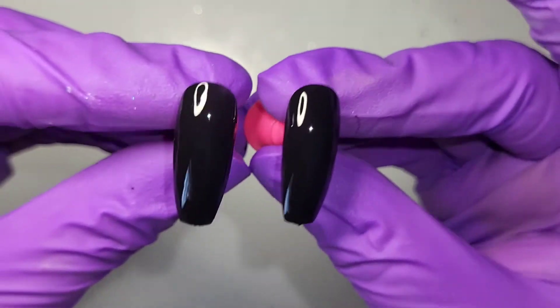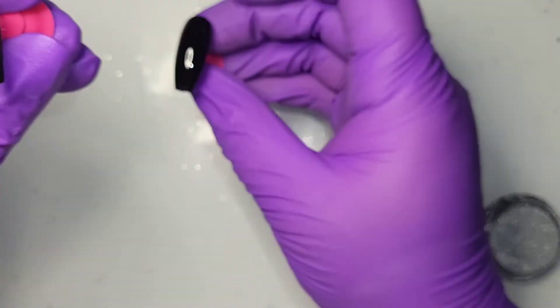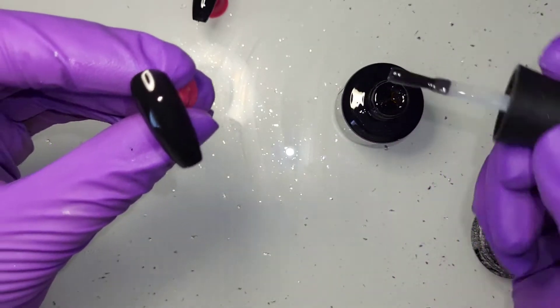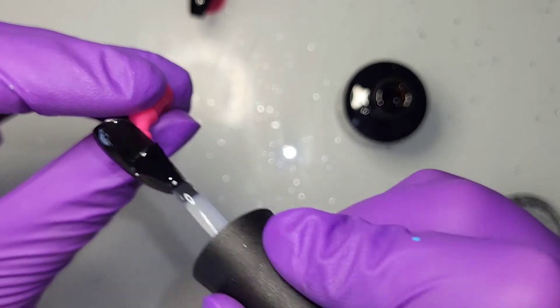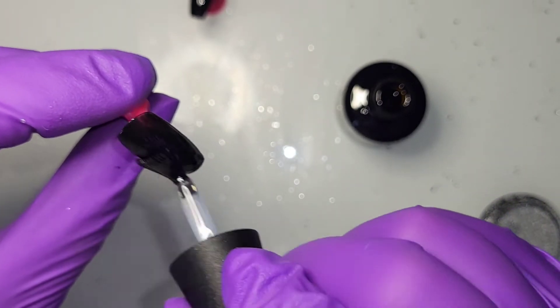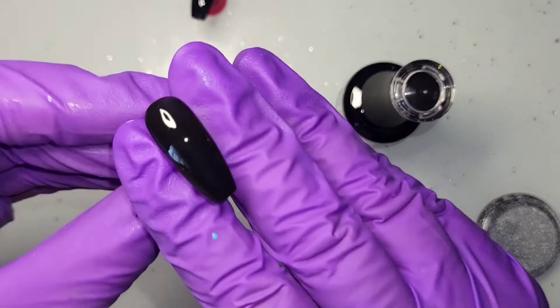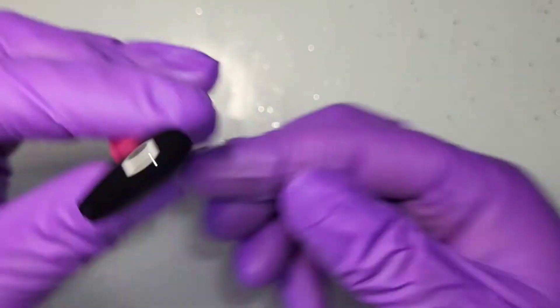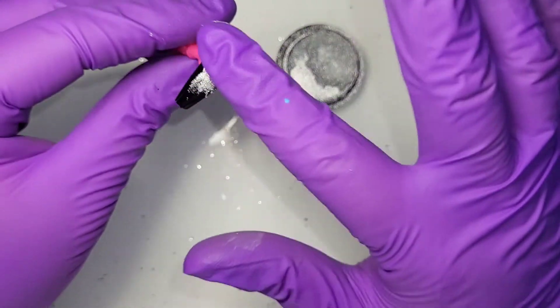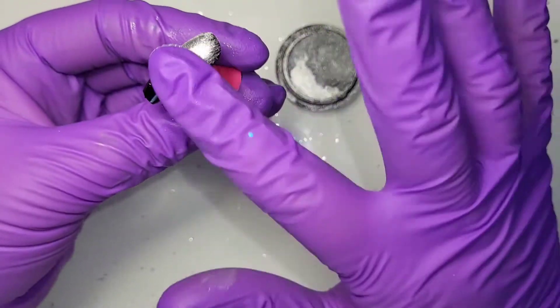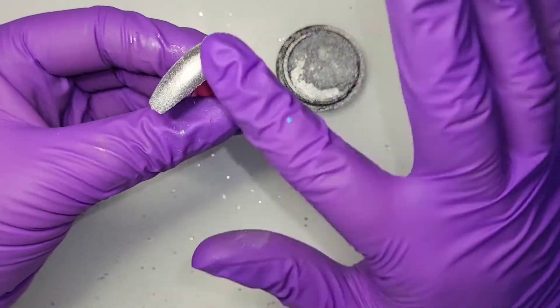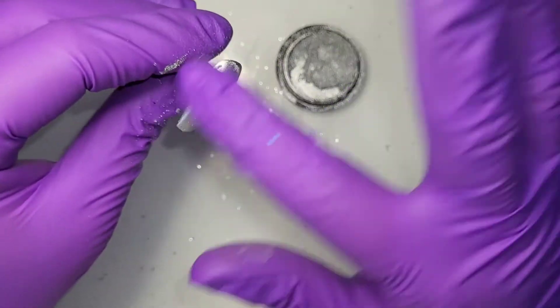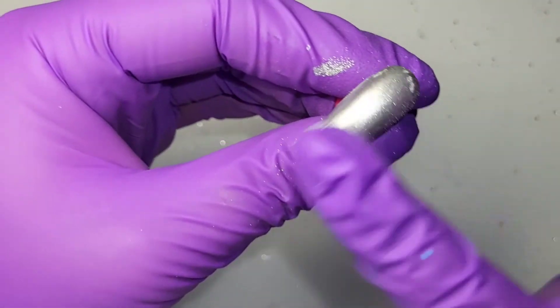I'm going to show you now. I've got two nails in black. I'm going to top this one with a glossy no-wipe top coat. Pop it in the lamp. While that's curing, I'll show you the chrome powder on just the sticky layer. I don't think it goes very chrome. It just goes silver, no matter how many times I rub it in.